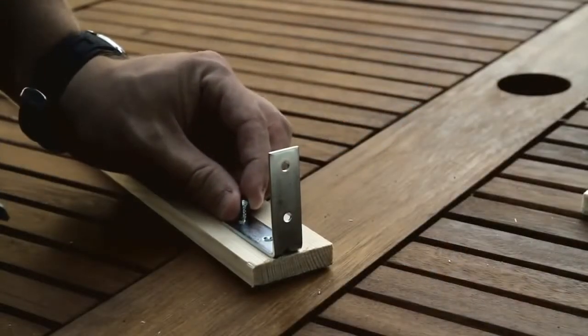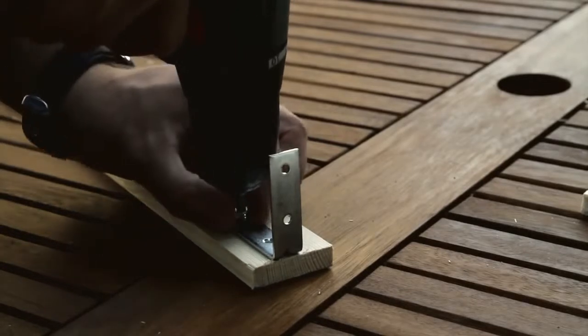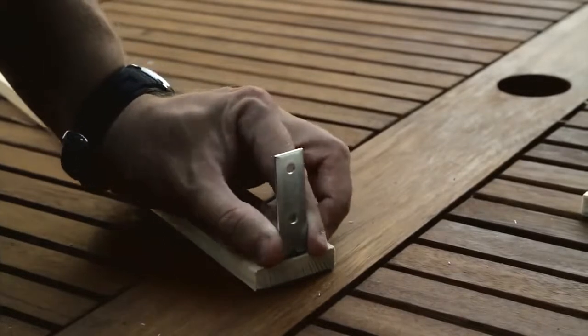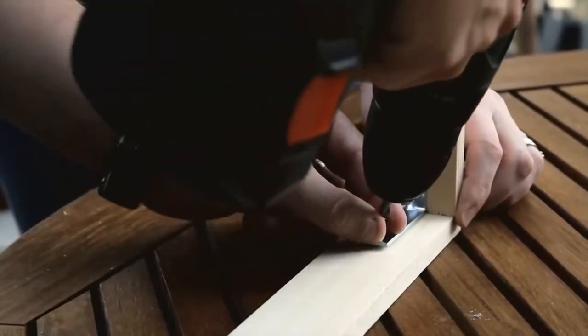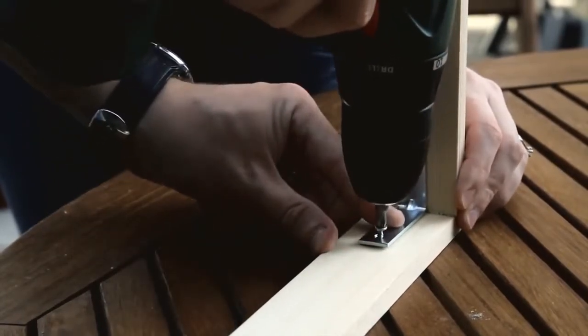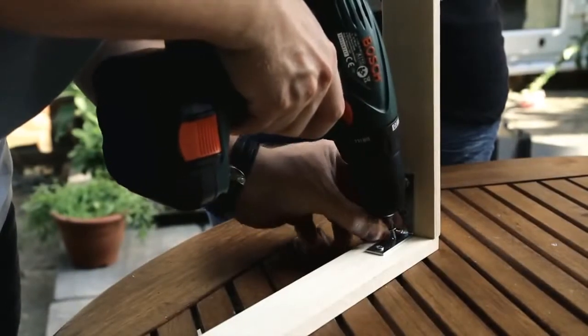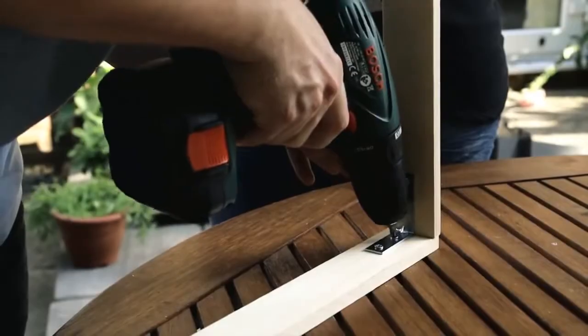Attach the corner brace to the end of one of the long pieces of wood. Stand the long piece of wood on top of the shorter piece, line them up neatly and join together. Fill all four holes with screws to ensure a solid join.